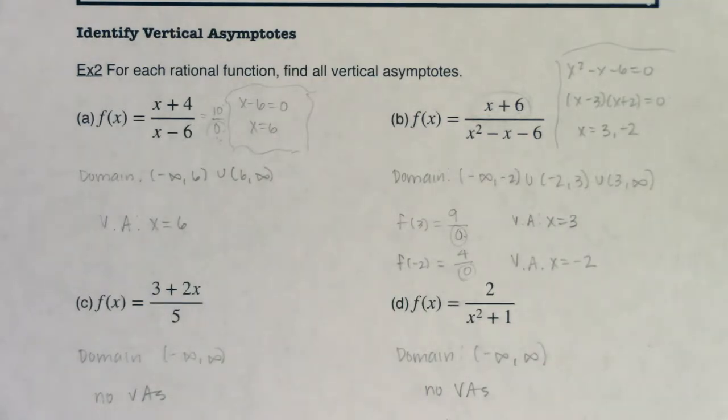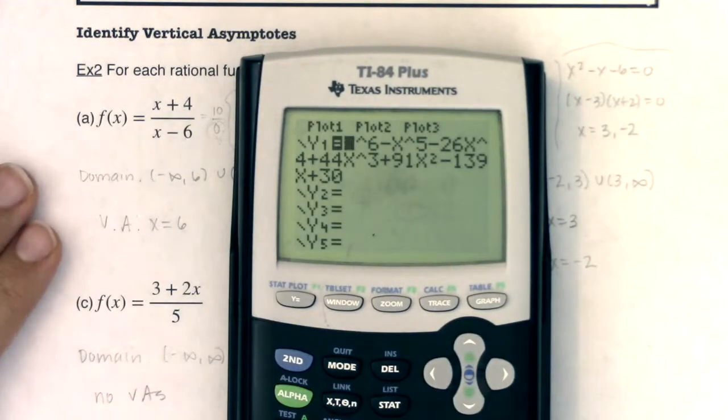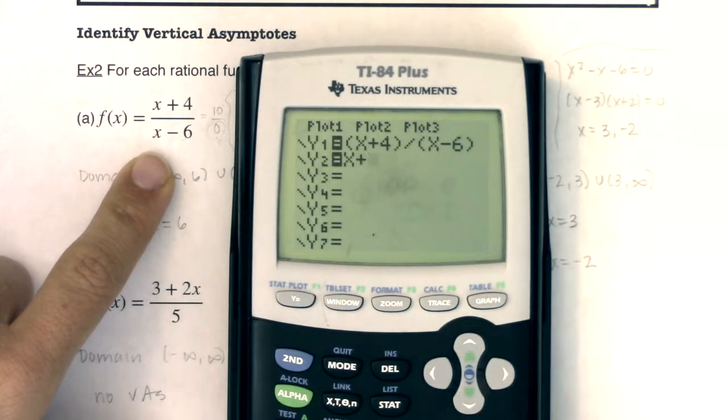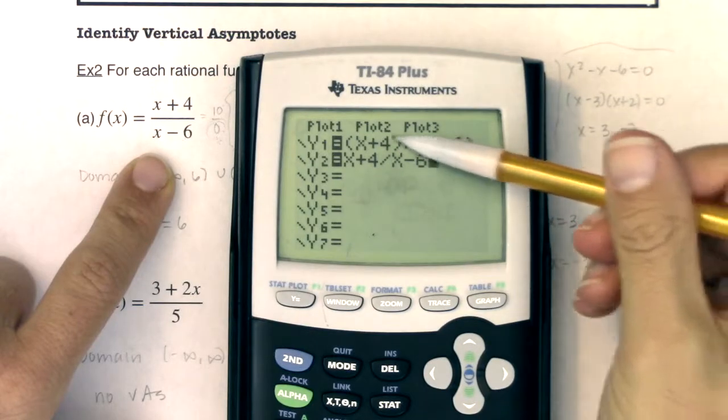Now, before we get too much further, I do want to show you what this starts to look like on your graphing calculator. If I hit my y equals, and let me clear that out, I want to punch in this rational function, and be careful, put parentheses around those binomials. If you don't protect your binomials, if you just write x plus 4 divided by x minus 6, your calculator is going to do a very different graph.